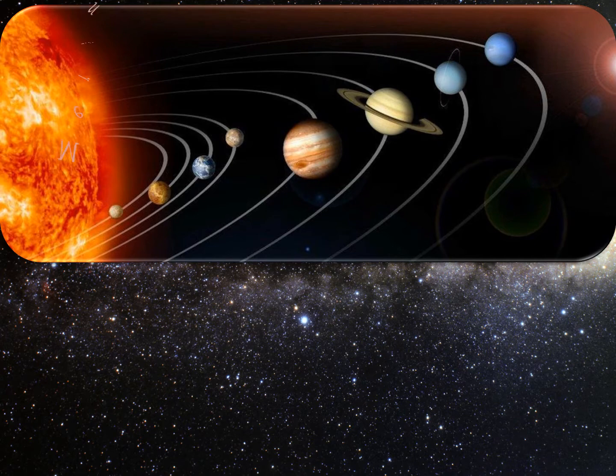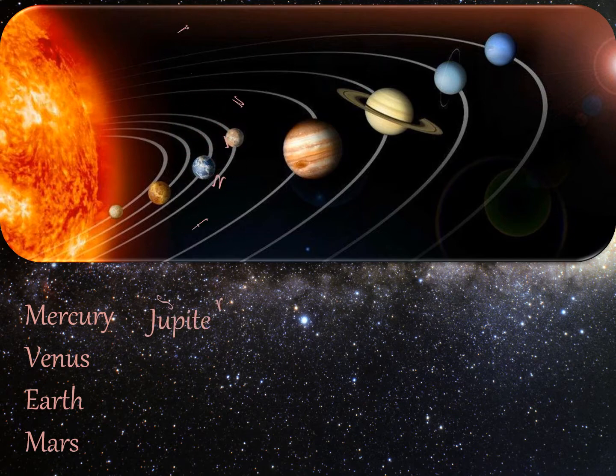The 8 planets are Mercury, Venus, Earth, Mars, Jupiter, and Saturn.